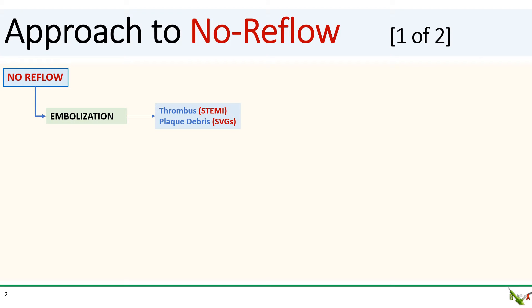When you have a no reflow situation, the first thing to do is to try to figure out the cause. In a STEMI situation, the most common cause is embolization caused by disrupted thrombus embolizing downstream and clogging the arterioles and smaller vessels.